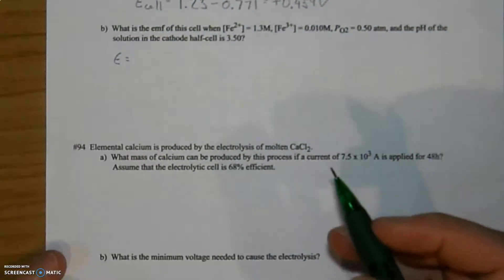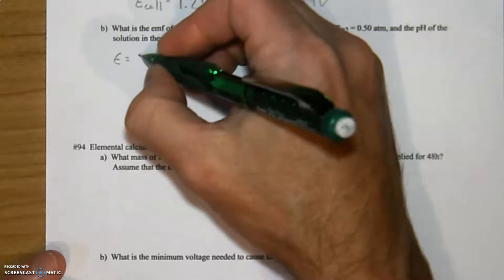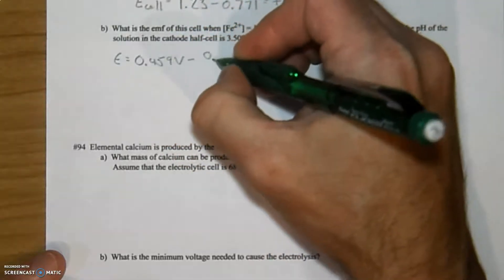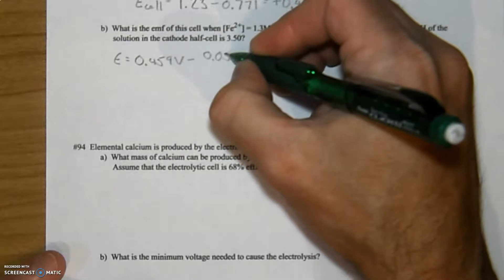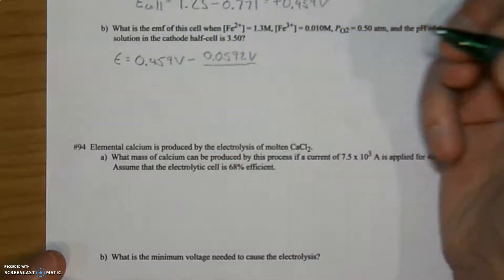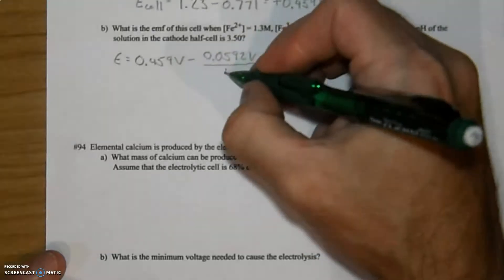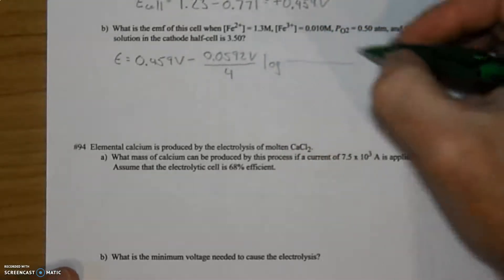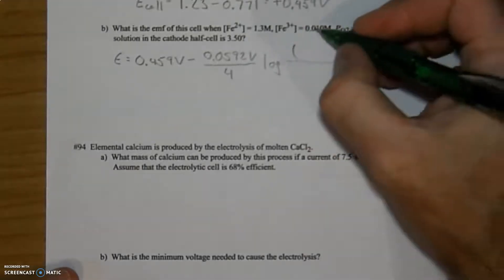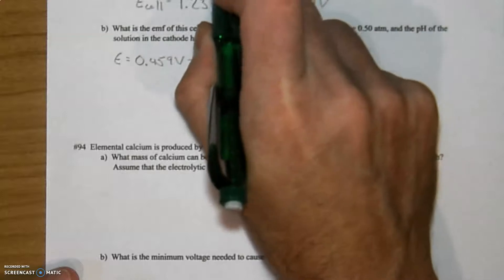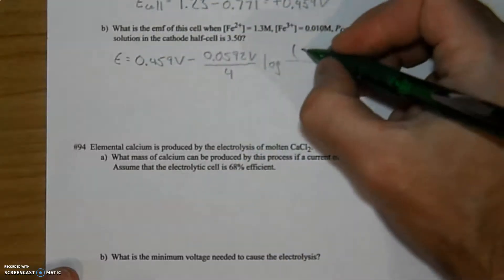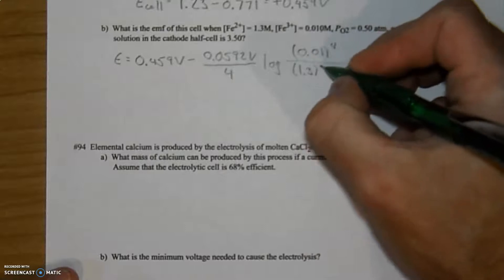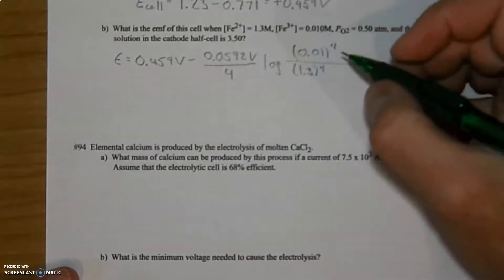So we are going to bring in the information we had previously, so E standard is 0.459 volts minus this standard value which we derived earlier. As far as the electrons that are changing place, it's going to be 4, and then the log of the Q values that we have here. We have the iron solution, so putting on the stuff that's on top raised to their exponential or coefficient values: 0.01 raised to the 4th, 1.3 raised to the 4th. I'm just grabbing these out of the concentrations and the pressures that are given to us.